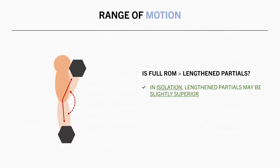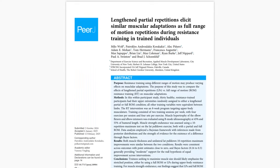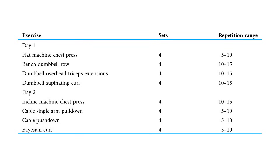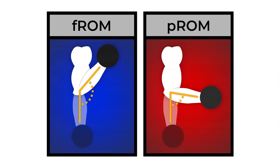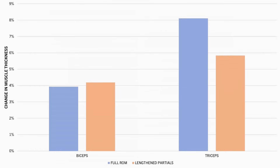While these effects are noticeable in very isolated training scenarios, the same results may not be seen in practice. When we perform a well-rounded, full-body training routine, the small benefits from lengthened partials seem to be mostly washed out. This was seen in a study comparing the effects of a comprehensive upper-body training routine using different ranges of motion — one group performed full range of motion for all exercises, while the other performed lengthened partials for all exercises. After eight weeks of training, biceps and triceps muscle thickness increased to a similar magnitude in both groups, with no notable differences between them.